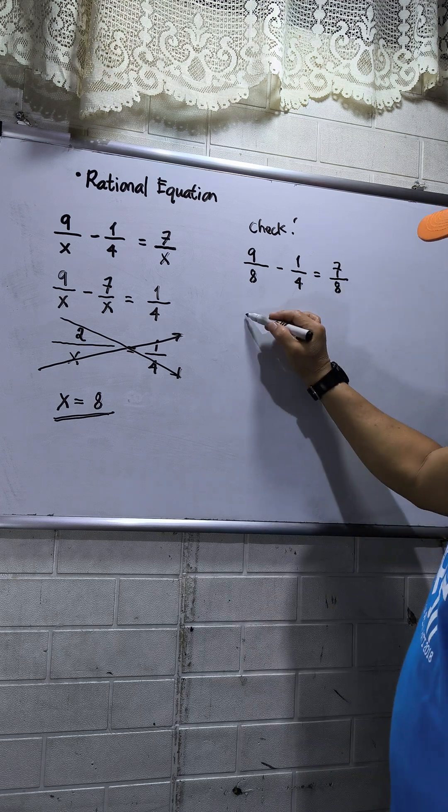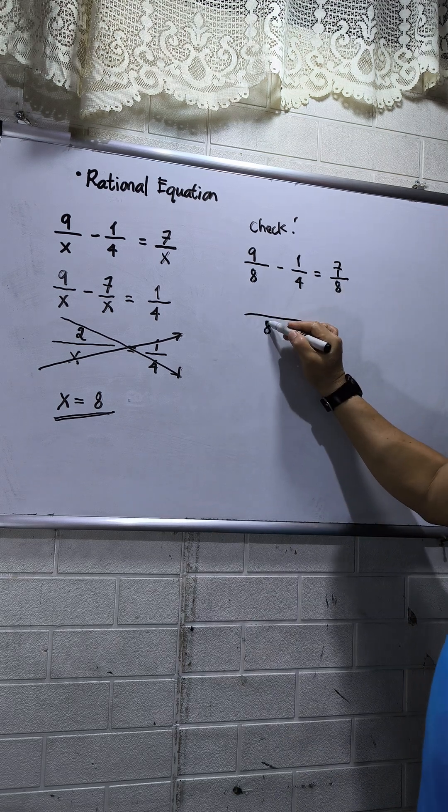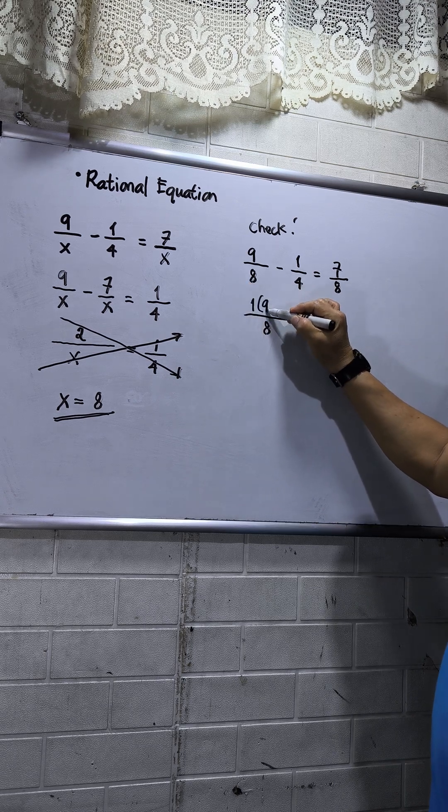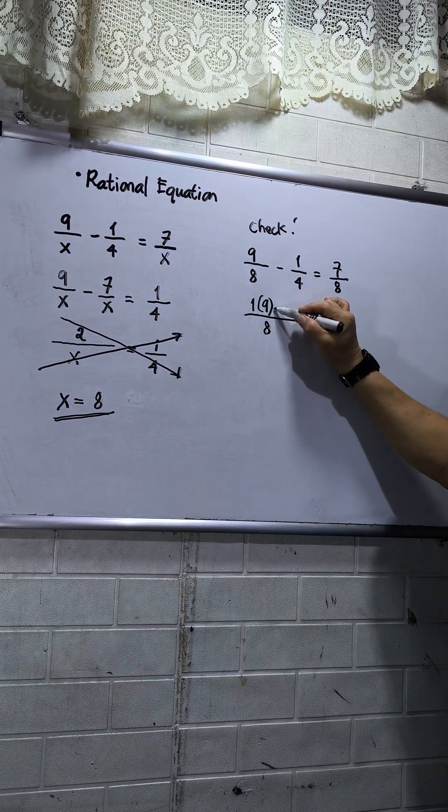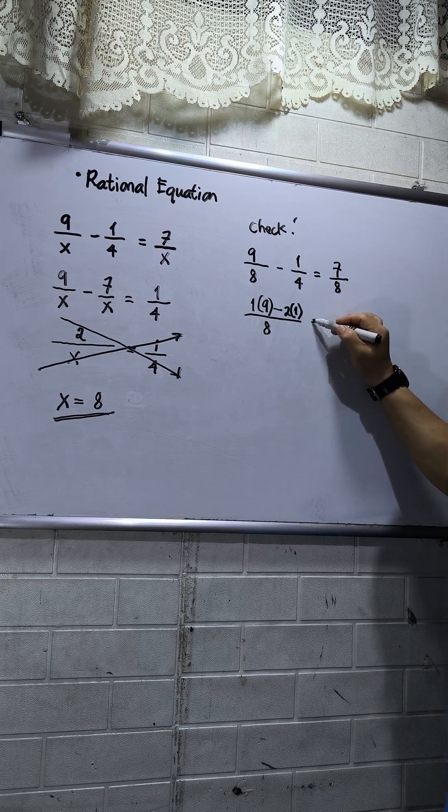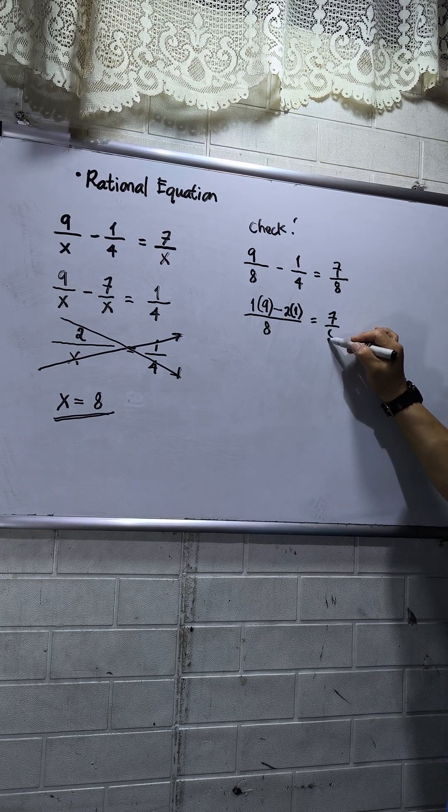Okay, LCD at the left side is 8. 8 divided by 8, that is 1, times the numerator which is 9. Then minus 8 divided by 4, that is 2, times 1. Then this will be equal to 7 over 8.